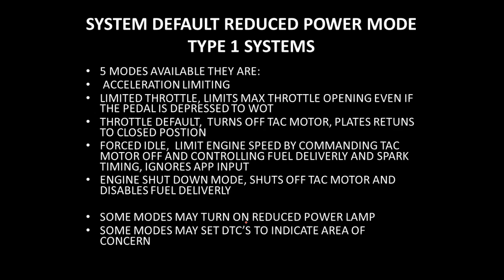On Type 1 systems, there are five default modes that can occur if there's a malfunction. First is accelerator limiting, which limits how far you can push the accelerator. Second is limited throttle, which limits the maximum throttle regardless of accelerator position. Third is throttle default, which turns off the TAC motor and basically leaves you at idle position. Fourth is forced idle, which limits engine speed so the engine cannot be revved. Fifth is engine shutdown mode, which disables the fuel system and shuts off the engine. Some of these modes will set DTCs, and some will also turn on the reduced power light.